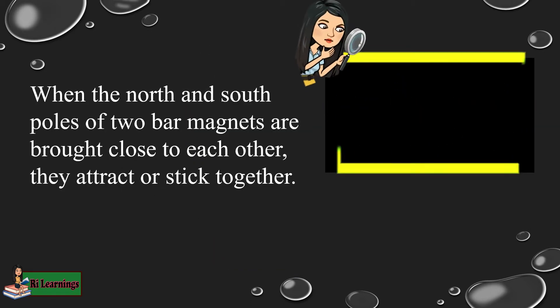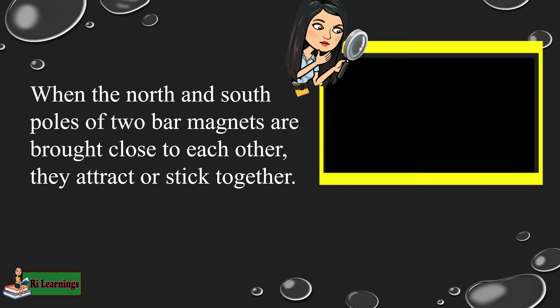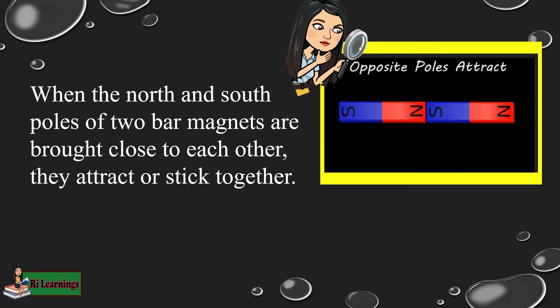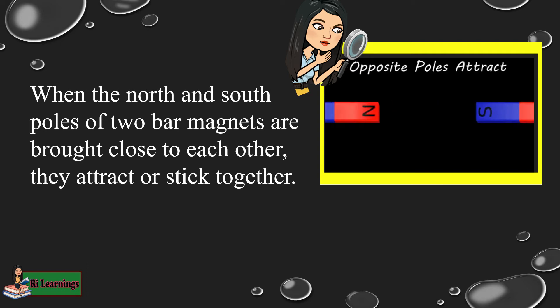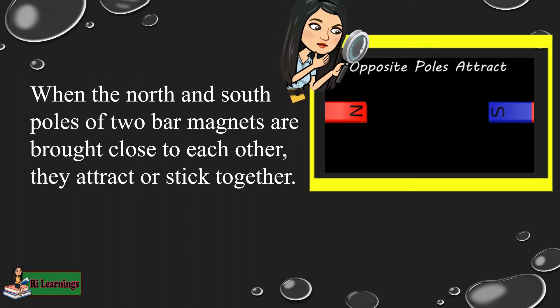When the north and south poles of two bar magnets are brought close to each other, they attract or stick together. This is shown on the right side of our screen. Remember, opposite poles attract.